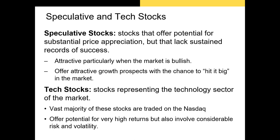Tech stocks are simply stocks in the tech sector. Most of the stocks on the Nasdaq have at least some operations in the tech sector. Tech stocks include firms that produce computers, semiconductors, data storage devices, software, internet services, and wireless communications. We all know the big players: Facebook, Apple, Amazon, Netflix, and Google — these firms are referred to as the FAANG stocks. Historically these and other tech stocks have offered high returns, but they also come with very high return volatility.